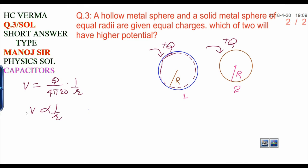Carefully, you can see V is inversely proportional to R when charge is constant. That is given in the question. Charge is the same. Therefore, when charge is the same, V is inversely proportional to R.